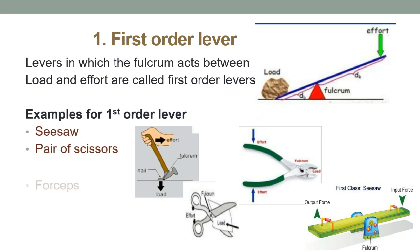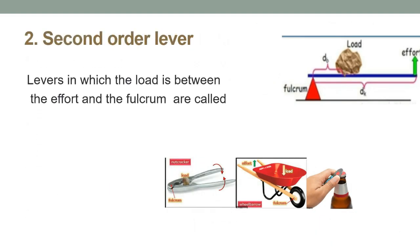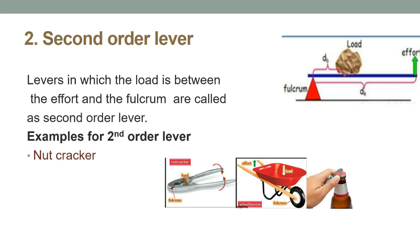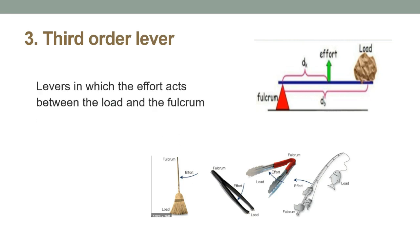In second order lever the load lies in between the effort and the fulcrum. Nutcrackers, wheelbarrow, and bottle opener are some examples for second order levers. In third order lever you find the effort in between the load and the fulcrum. Fishing rod, broom, tweezers, and tongs are some examples for third order lever.